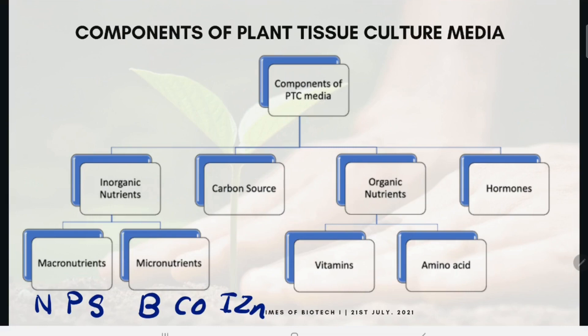Why do we add all these macro and micronutrients? If we consider nitrogen as an example, it plays a role in components of protein, nucleic acid, and some coenzymes. Phosphorus has an application in energy transfer and components of intermediates in respiration and photosynthesis. Micronutrients such as copper play a role in electron transfer reactions, and zinc has a role in chlorophyll biosynthesis. So we can see they are very much essential for plant growth, even in artificial conditions.